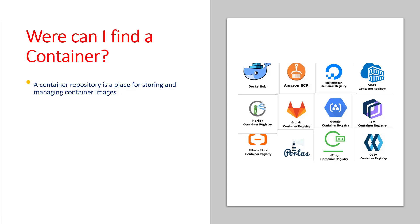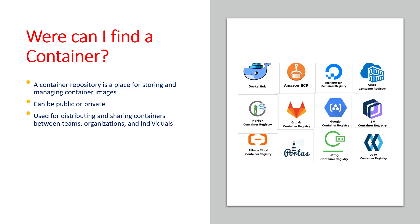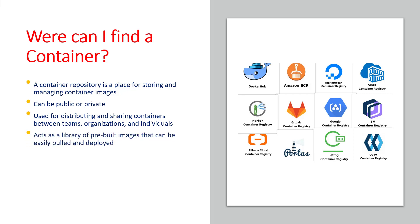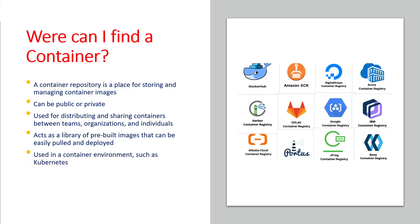Container repositories can be private or public and they are used to distribute and share container images between teams, organizations, and individuals. Container repositories can also act as a private library that can easily be pulled and deployed in environments such as Kubernetes. Examples of popular container repositories are Docker Hub, Google Container Registry, and Amazon Elastic Container Registry.